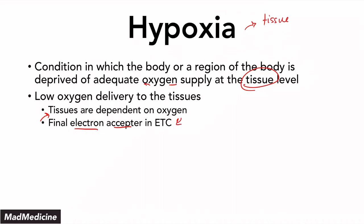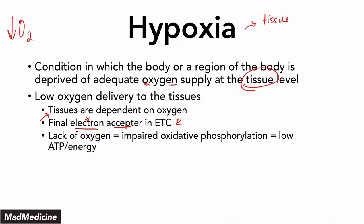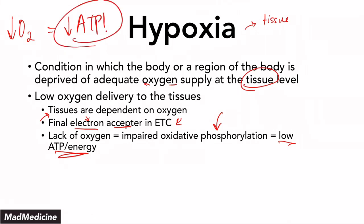Just a quick recap: you need oxygen to be able to accept the last electron in oxidative phosphorylation. So what happens when you have a decrease in oxygen in hypoxia? You are going to impair oxidative phosphorylation and not be able to accept electrons. At the end of the day, hypoxia is going to lead to low ATP or energy. That is why hypoxia is so dangerous and deadly to cells.